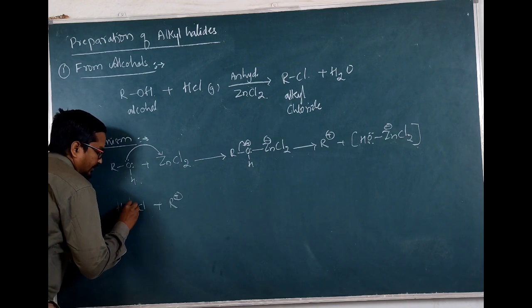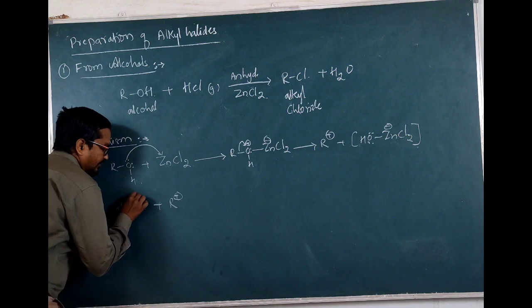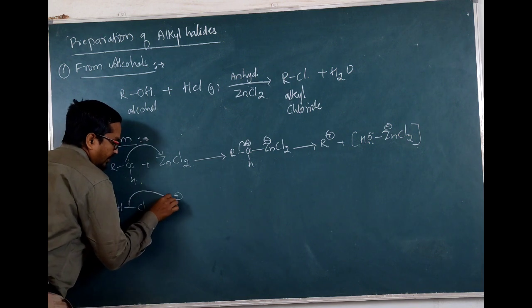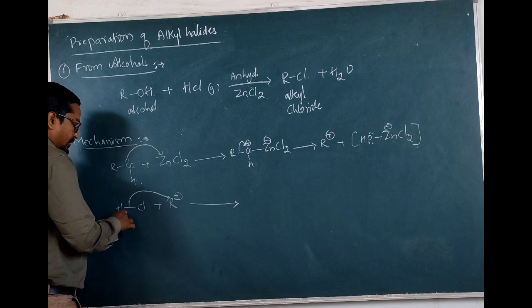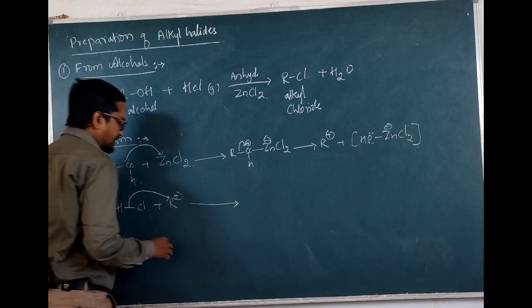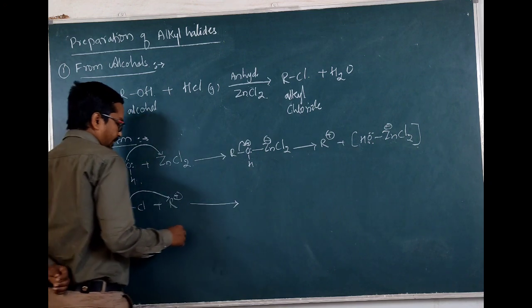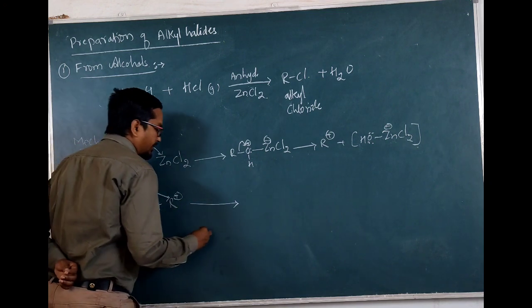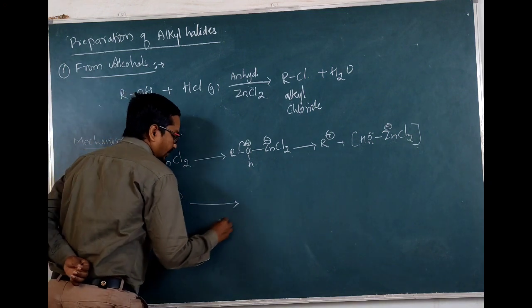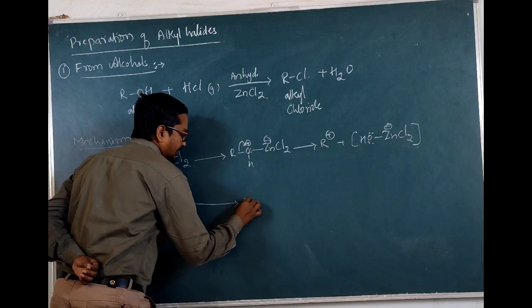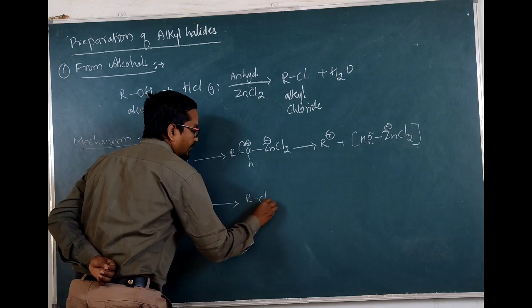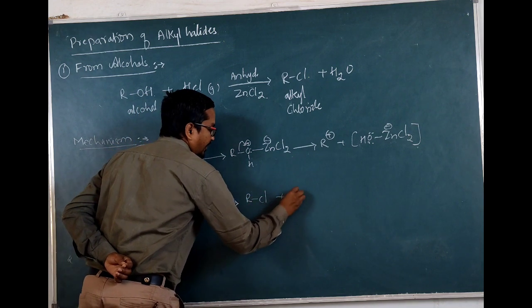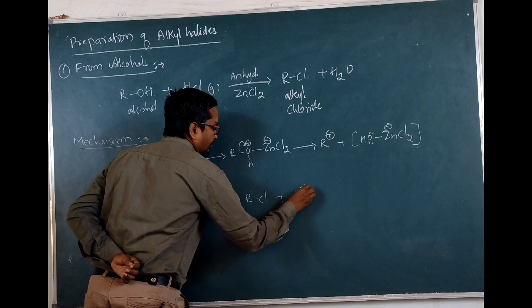This will shift — the chloride will shift to the carbonium ion. Deprotonation of hydrogen chloride takes place and there will be halogenation of the alkyl carbonium ion. Hence we can write it as RCl plus H⁺.